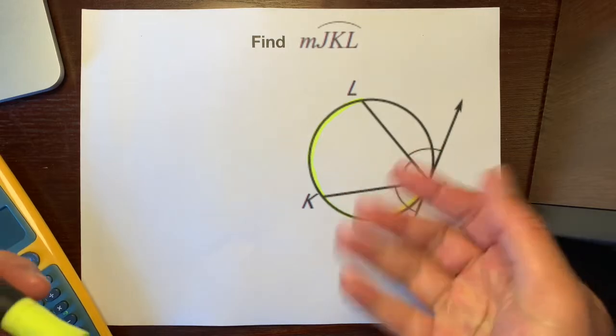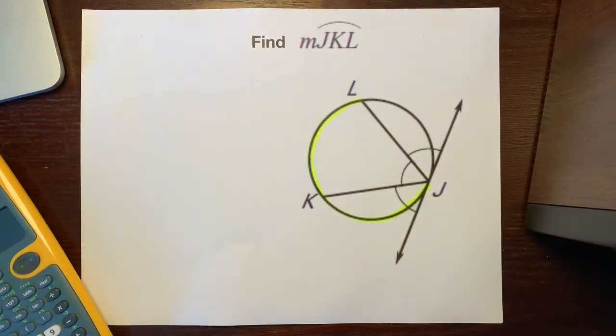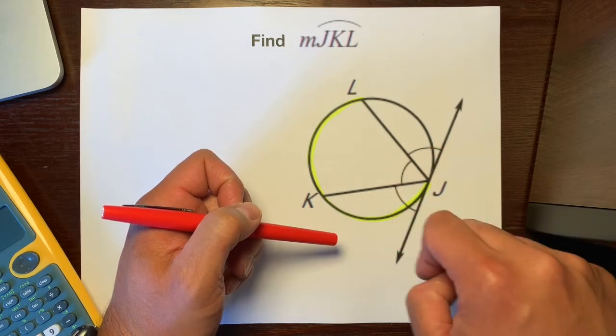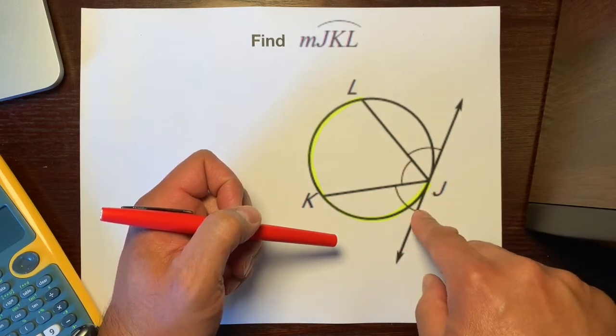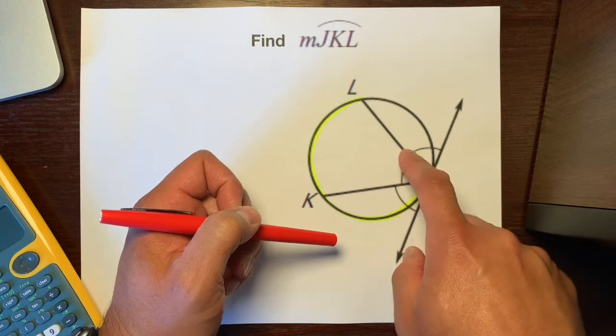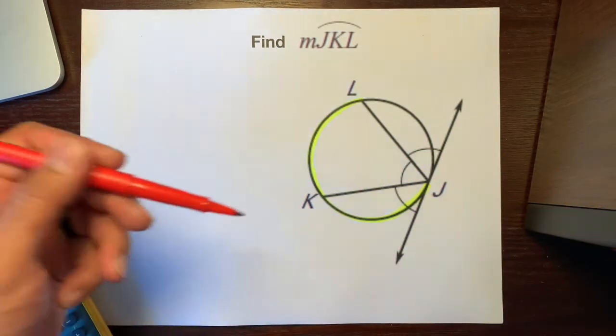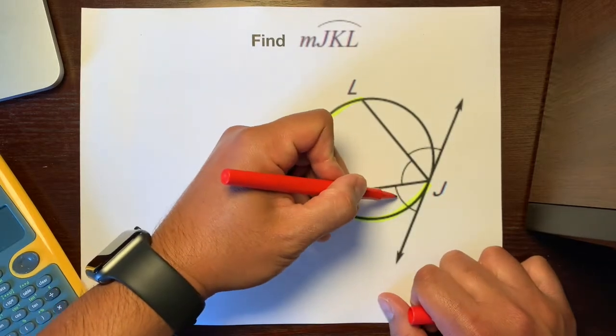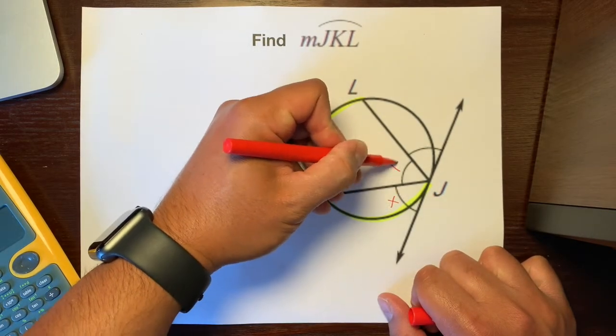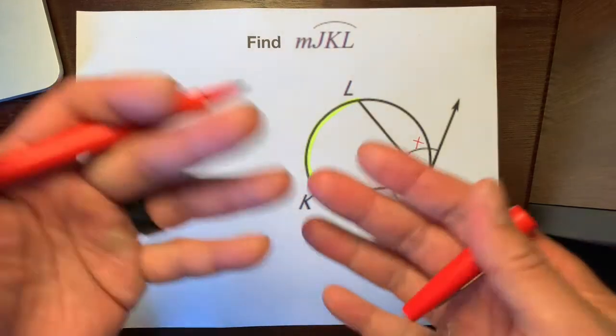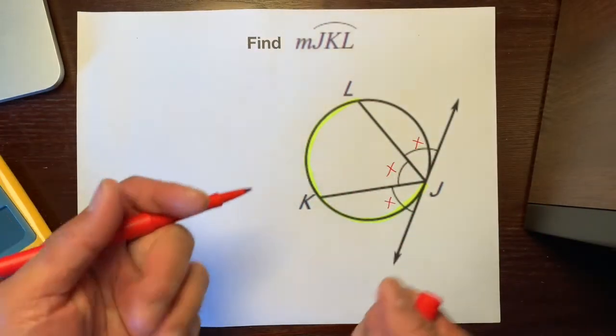So they give us a couple hints. They give us this arc right here and this little arc and this little arc saying that this angle is congruent to this angle which is also congruent to this angle. So if all three angles are congruent we could call each of them X. So this is X, this is X, and this is X since they all have the same measure and we don't know what the measure of those angles are yet.